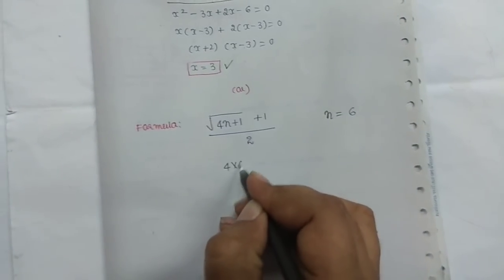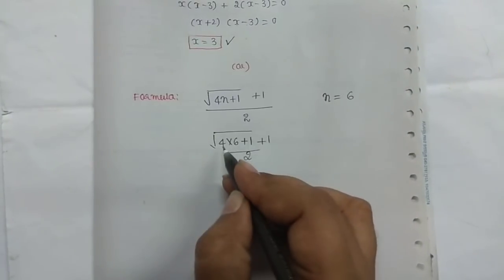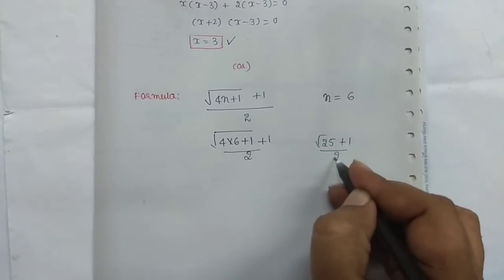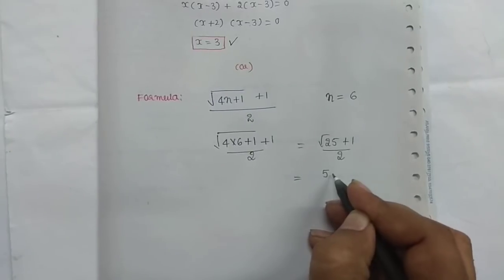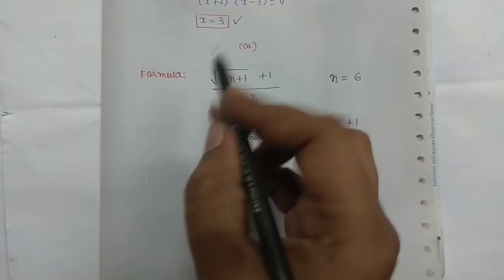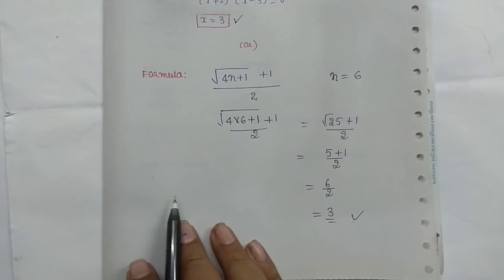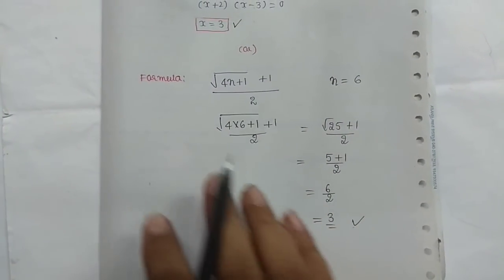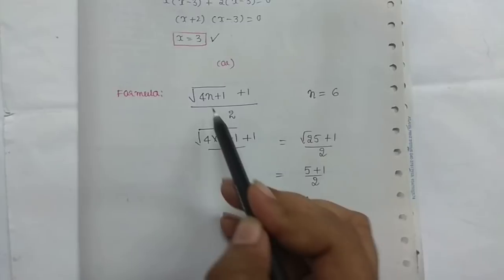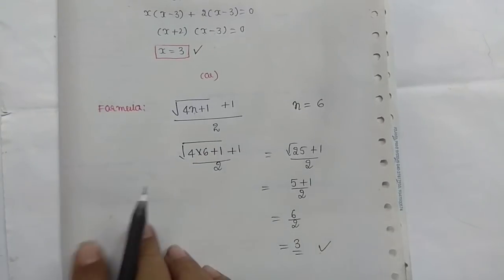So, 4 into 6 plus 1: take the root, plus 1 by 2. So, 4 times 6 is 24, plus 1 is 25. Root of 25 is 5, plus 1 by 2, means 6 by 2, is equal to 3. So the answer is 3. This formula will substitute and solve the problem.